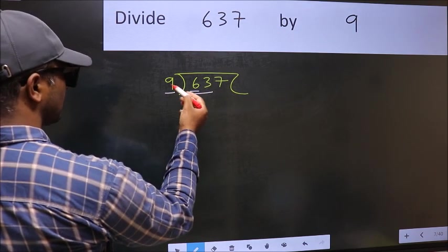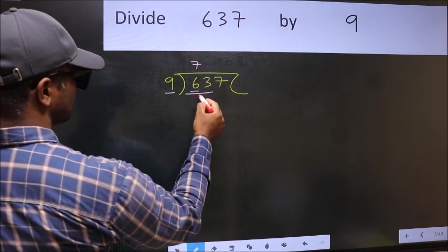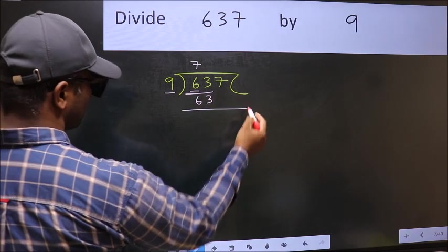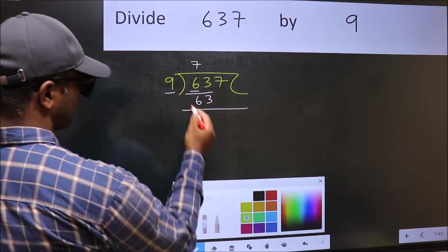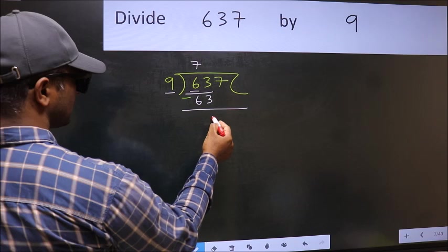When do we get 63 in the 9 table? 9 times 7 is 63. Now, we should subtract. 63 minus 63 is 0.